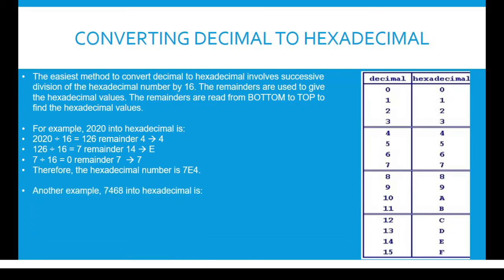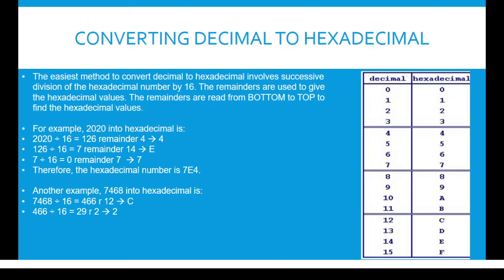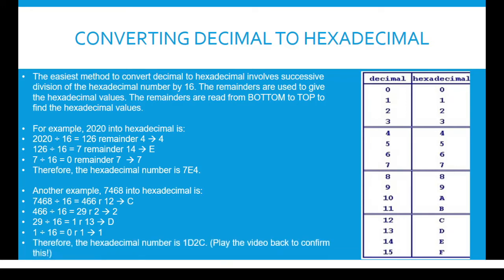Another example: 7468. You can refer to the table on the right to make it easier to find the hexadecimal values. 7468 divided by 16 is equal to 466 remainder 12, which is C. Then 466 divided by 16 is equal to 29 remainder 2, which is 2. Then 29 divided by 16 is 1 remainder 13, which is D. And 1 divided by 16 is 0 remainder 1, which is 1. Therefore, the hexadecimal number is 1D2C.